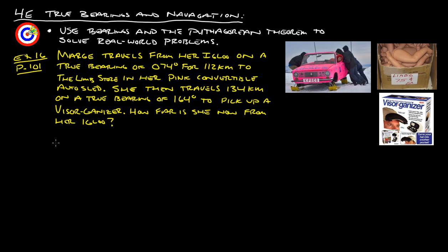Let's draw a picture. Here she is in her pink auto sled. She is traveling at a true bearing of, here's true north, 74 degrees. We know that this is 90, so 74 degrees must be something like that. This is 74 degrees. That's where she picks up the limbs at the limb store. From there, she heads, and you start with this here being due north. Now she travels at 164 degrees. Here's 90. 180 would be all the way down, so 164 is probably about right here. Now she's traveling on her sled like this here to pick up her visor-ganizer. This here is 164 degrees.